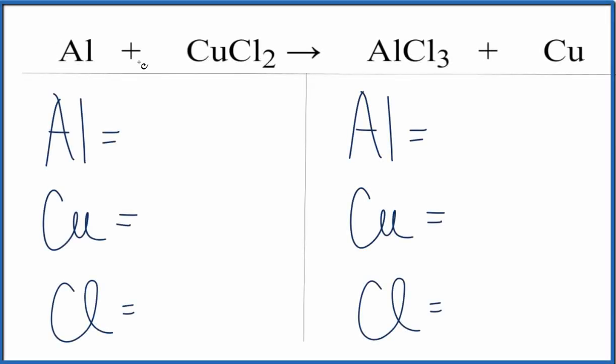For this equation, we have aluminum, and we're adding that to copper 2 chloride. We end up with aluminum chloride and then this copper here.